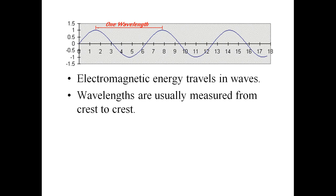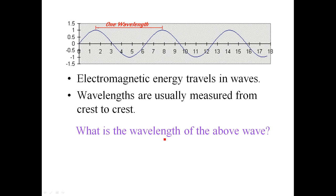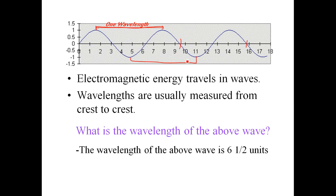Electromagnetic energy travels in waves. Wavelengths are usually measured from crest to crest. You can measure it crest to crest, trough to trough, or from one part of the wave to the same part of the next wave. It doesn't matter where you measure it from. This one is about 6½ units for its wavelength.